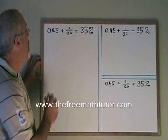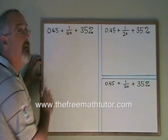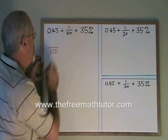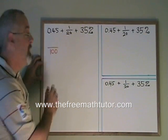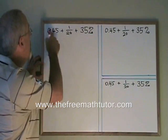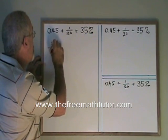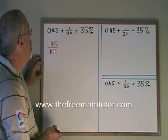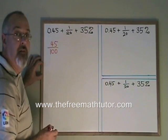0.45 has two numbers after the decimal, so I write the denominator of 100, a one with two zeros, as many zeros as there are numbers after the decimal. Then I write the numbers after the decimal as my numerator, and I don't bring the decimal with it. 0.45 is equivalent to 45 hundredths.